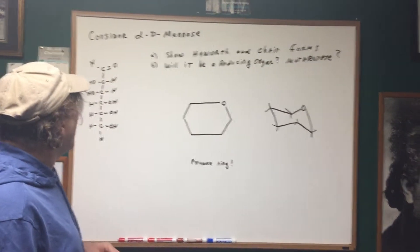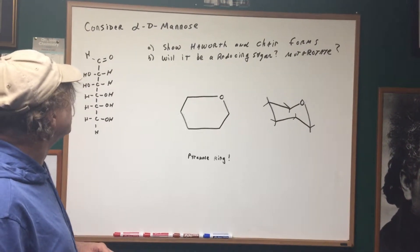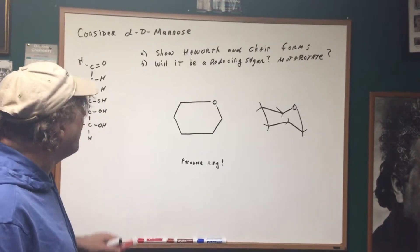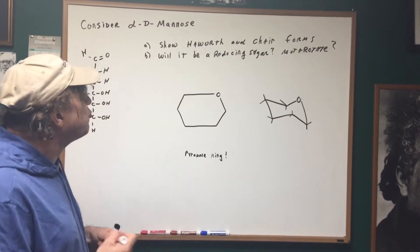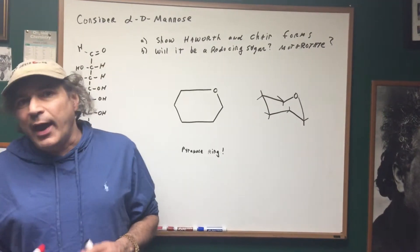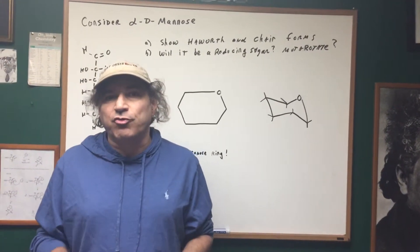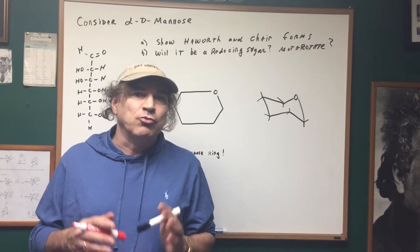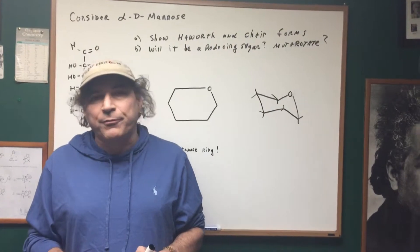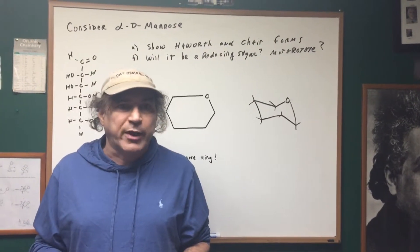I give you a molecule called alpha-D-mannose and it says to consider it. And I gave you what's called the open chain form. And what I want to first do is to draw what's called the Haworth and the chair forms. More than 99% of the sugars will exist in what we call the ring form. So what we need to do is to go from the open form into what we call this ring form.